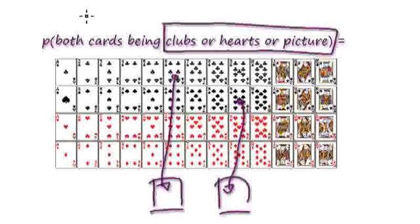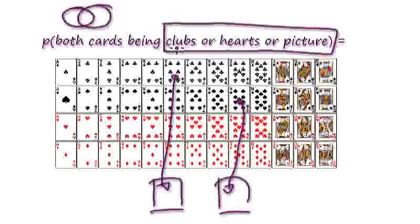"Or" means the union of the two. Let's say we're going to pick the six of clubs here. We want clubs, or hearts, or picture. Well, this is a club already, so this here is a good outcome.